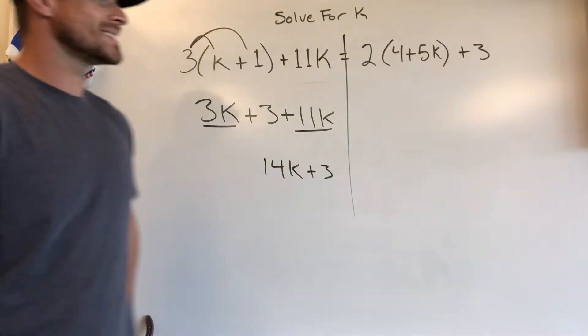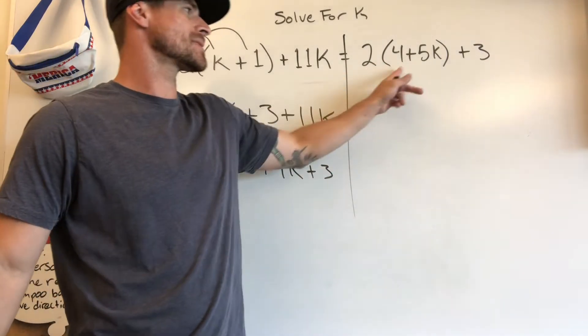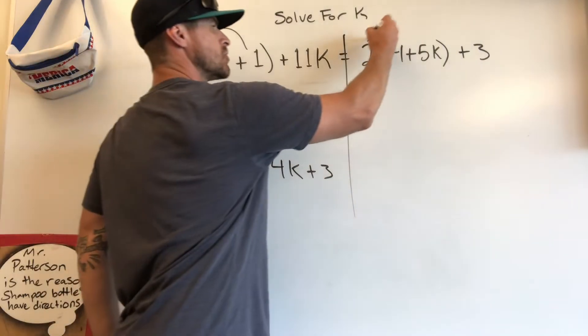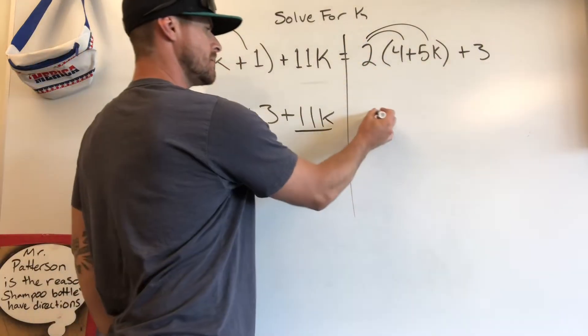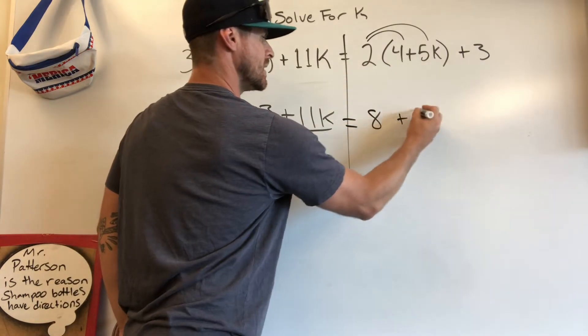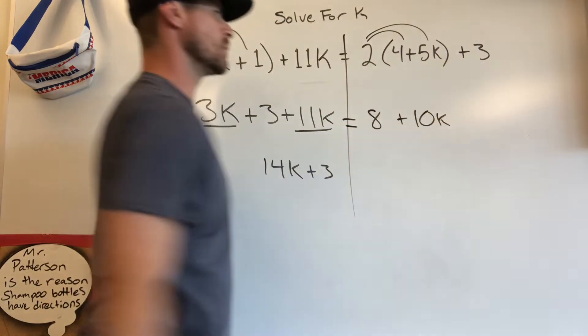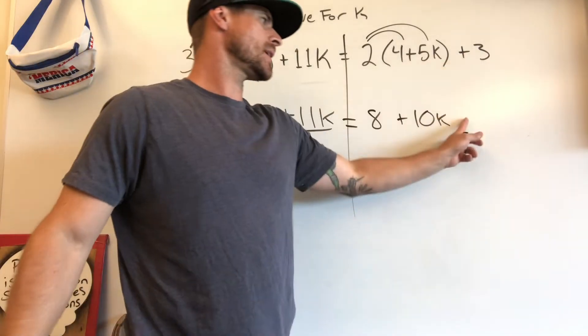Over here, we're going to do the exact same thing. We have a constant outside of a grouping symbol, and we're going to need to distribute to both of those. That's multiplication happening. 2 times 4 gives me 8. 2 times 5k is going to give me 10k. Don't forget to attach the variable to it. Just bring down plus 3.